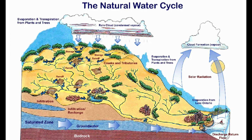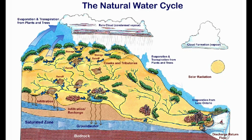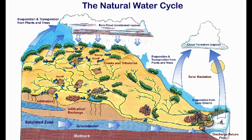When it rains, we can often see the rainfall collecting on the land, draining downhill into ditches, streams, and rivers. Those watercourses then flow downhill into larger bodies of water like lakes and even oceans.